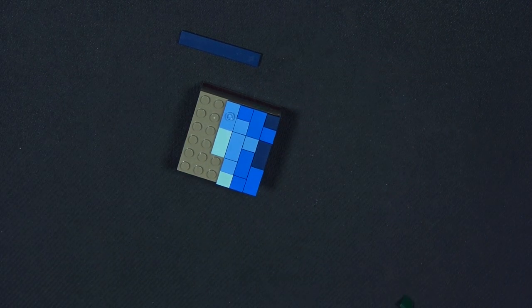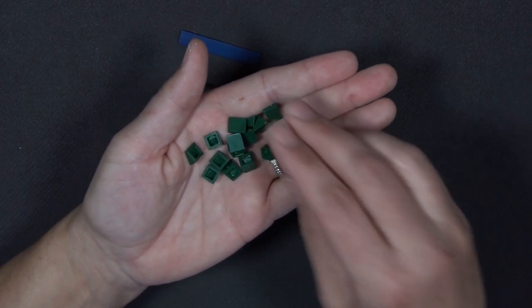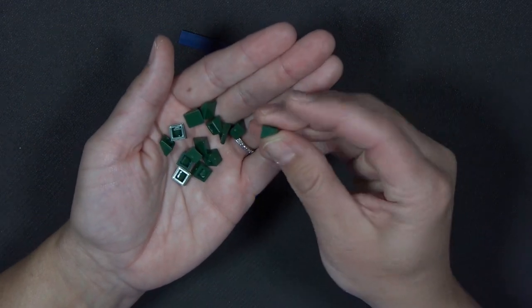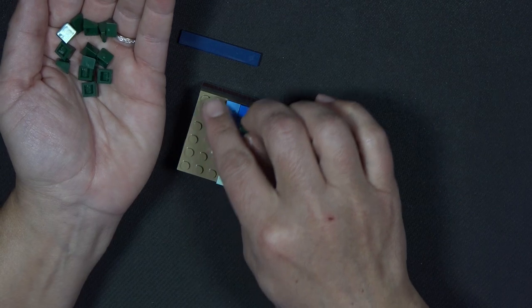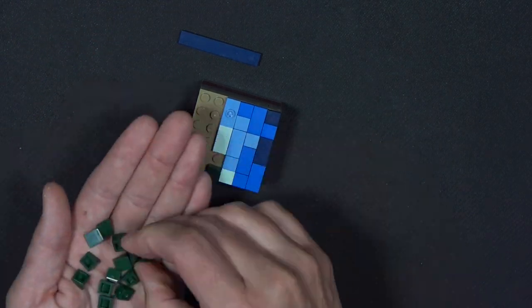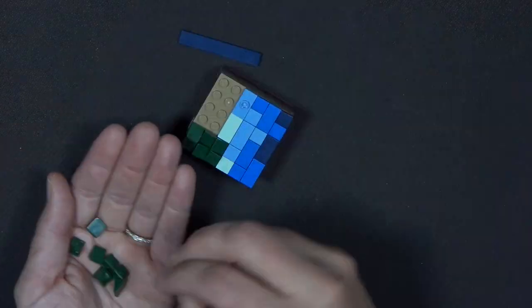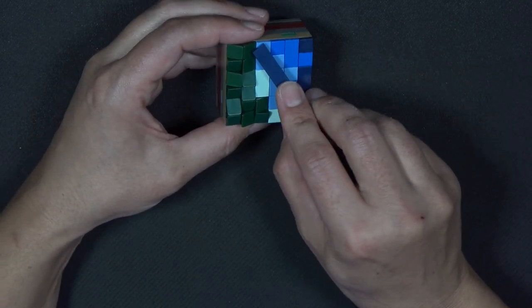Next I have 14 of these sloped wedge pieces. And these are just going to sit on all of those studs, and you can arrange them however you like. And then we put our 1x6 tile in dark blue on top.